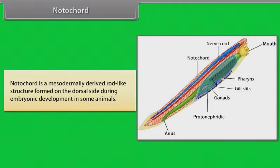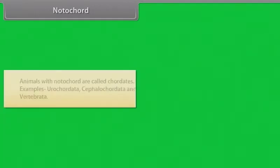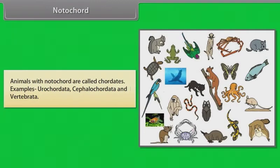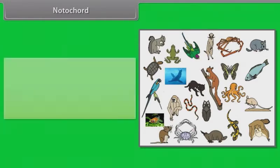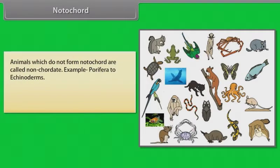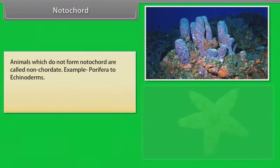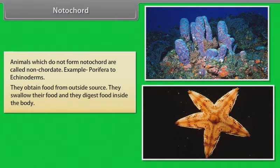Notochord is a mesodermally derived rod-like structure formed on the dorsal side during embryonic development in some animals. Animals with notochord are called chordates. Example: Urochordata, Cephalochordata and Vertebrata. Animals which do not form a notochord are called non-chordates. Example: Porifera to Echinoderms. They obtain food from outside sources, swallow their food, and digest it inside the body.